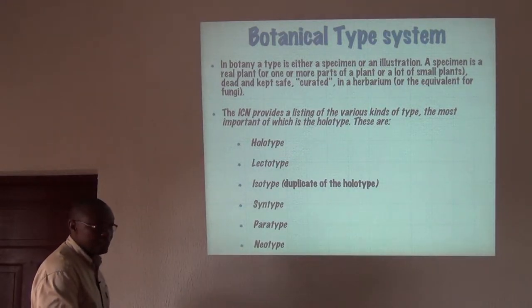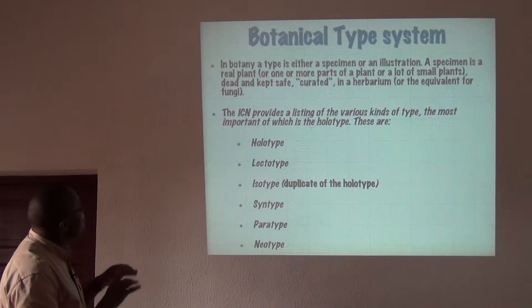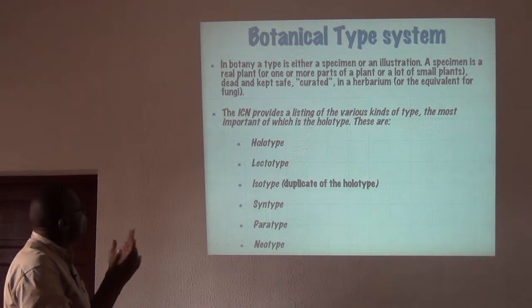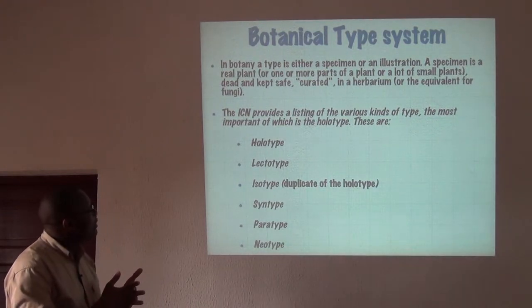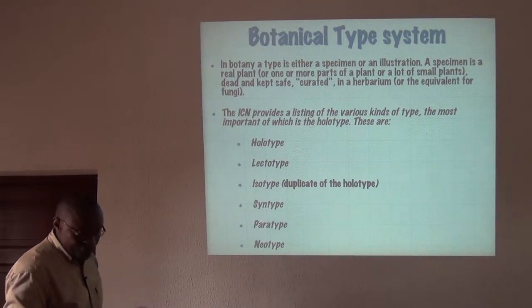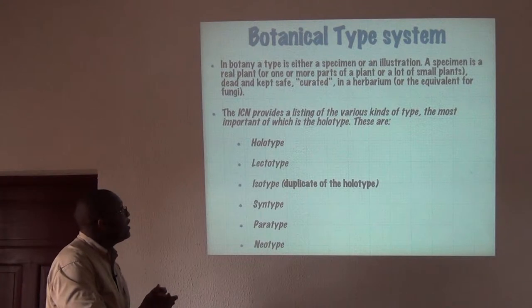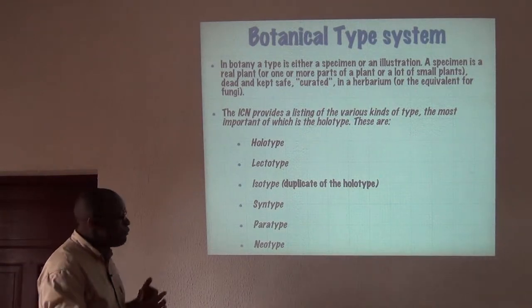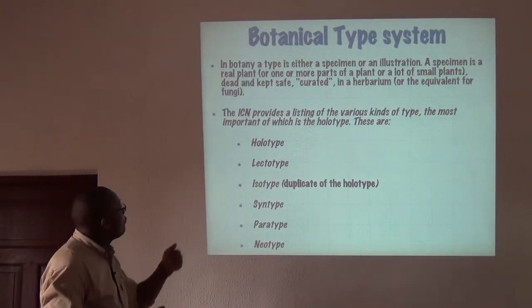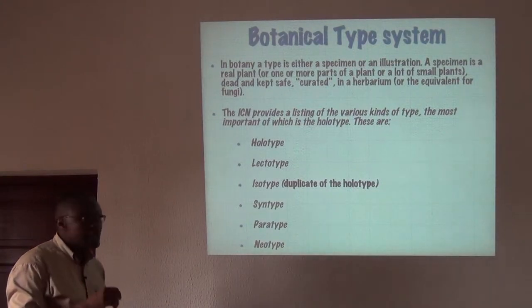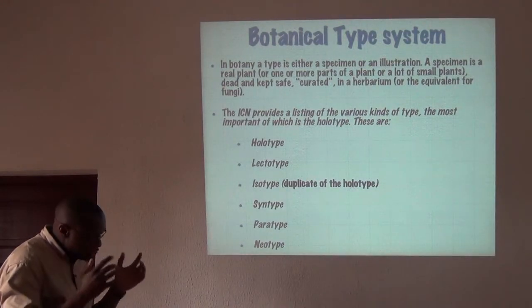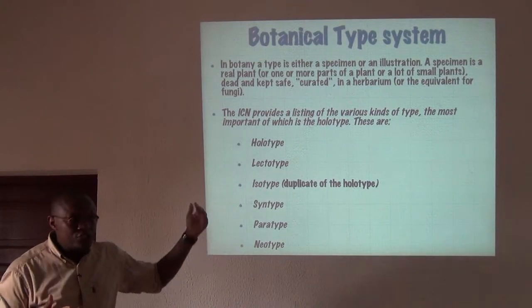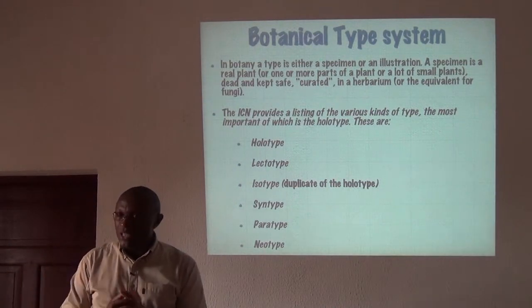The botanical type system: in botany, a type is either a specimen or an illustration. A specimen is a real plant, or one or more parts of a plant, or a lot of small plants. They are of course dead and kept safe, preserved in a herbarium or the equivalent for fungi. The International Code of Nomenclature provides a listing of the various kinds of types, the most important of which is the holotype.